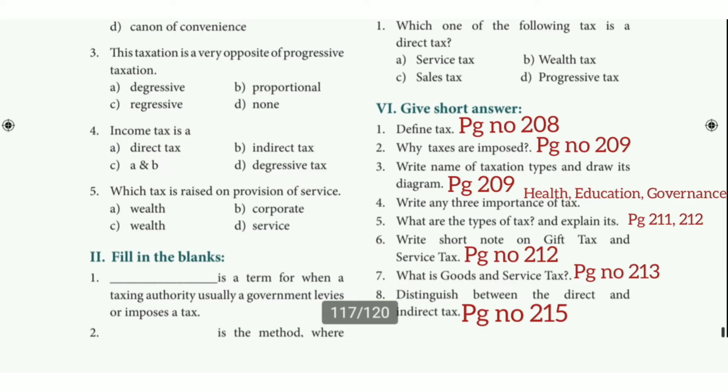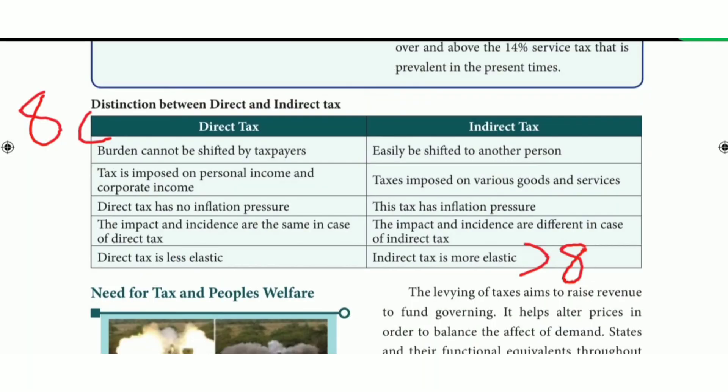Eighth question: distinguish between direct and indirect tax. Refer to page 215. In the box there are four points to note.